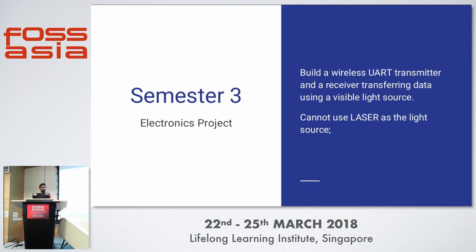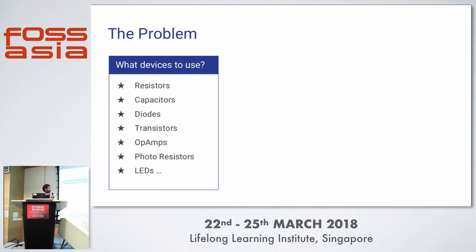The main problem was the electronic circuit, because we had just finished semester 2, which was more into theoretical stuff, so we didn't have any practical experience. But we knew the fundamentals of electronics. With the knowledge we had, we came up with a few devices we might need for this project: resistors, capacitors, diodes, transistors to amplify signals, op-amps, photo resistors, photo transistors, and LEDs as a light source.